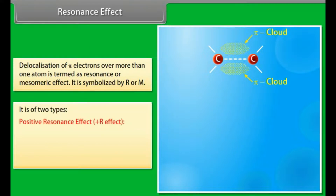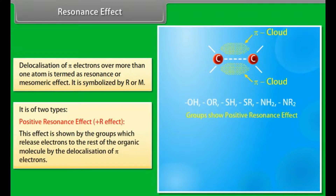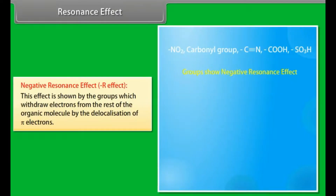Positive resonance effect (positive R effect): shown by groups which release electrons to the rest of the organic molecule by delocalization of pi-electrons, for example aniline. Negative resonance effect (negative R effect): shown by groups which withdraw electrons from the rest of the organic molecule by delocalization of pi-electrons, for example nitrobenzene.